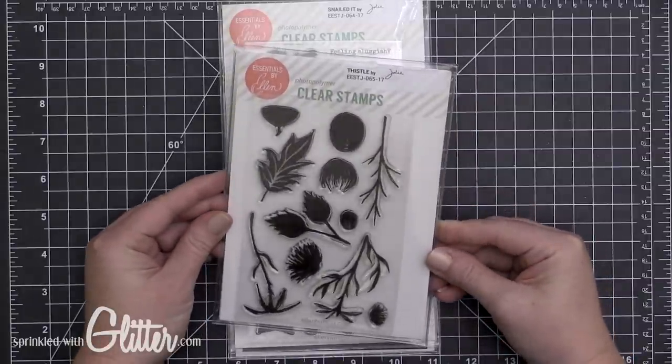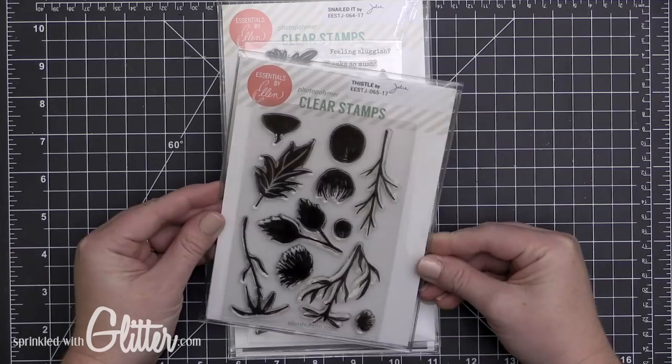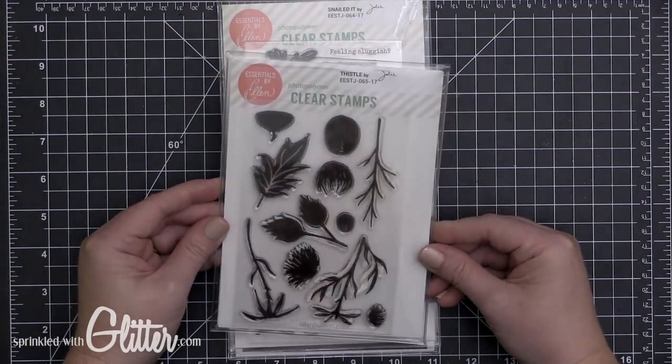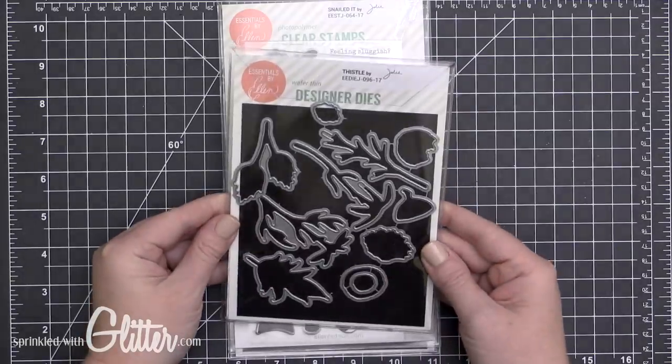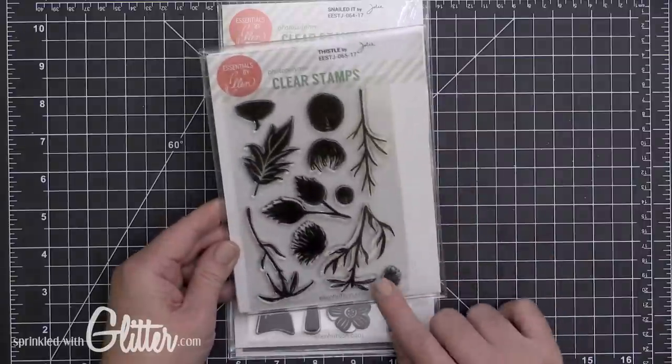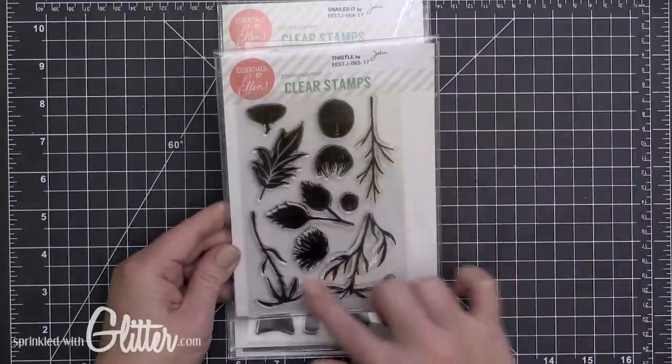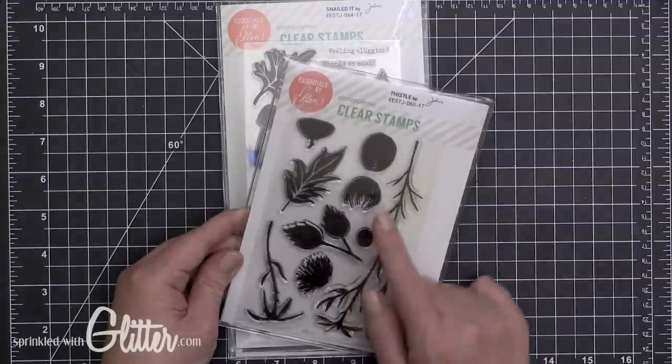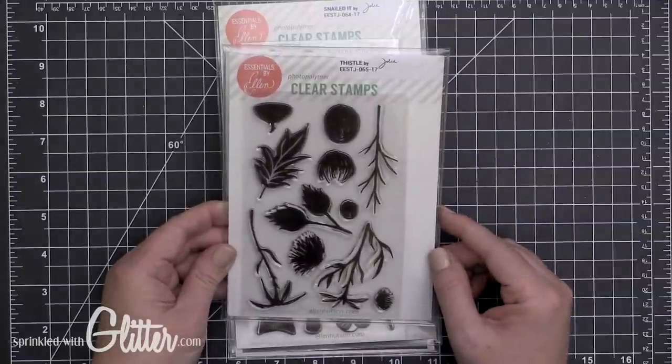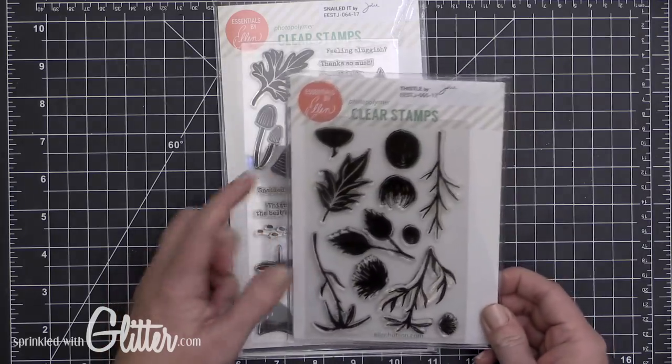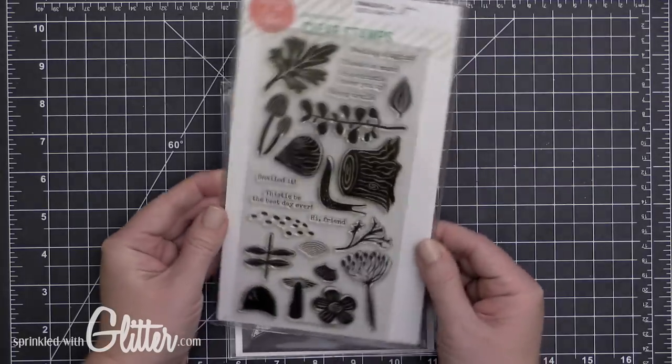Next up we have this Thistle stamp set. This is a beautiful stamp set. I love the sophistication of it and it looks very fall when you first look at it, but I think it could be used year-round by changing out the colors. I keep my coordinating dies stored on the back of my stamp set so that I always have them. Depending on the colors that you stamp these in, you can really make them appropriate for any time of the year. I love that little acorn—couldn't that be a beret?